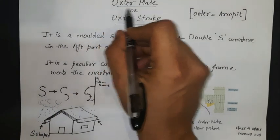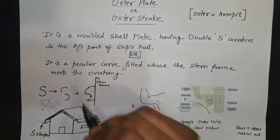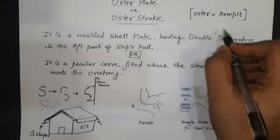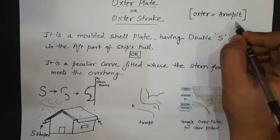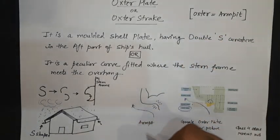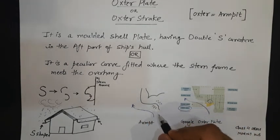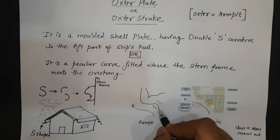So the oxter plate, or the oxter strake. Before we proceed to the definition, the meaning of oxter is armpit. As you can see here, this is the armpit of a human body. The armpit is here, between the arm and the body. So this part is called the oxter.